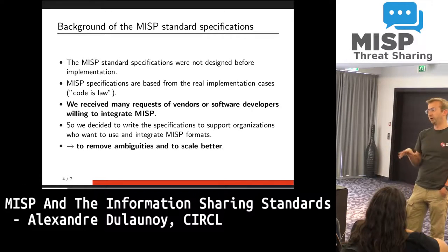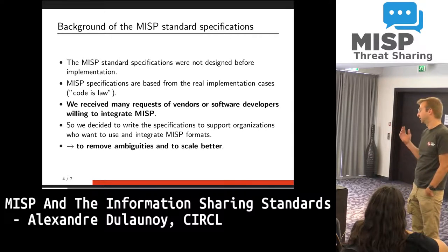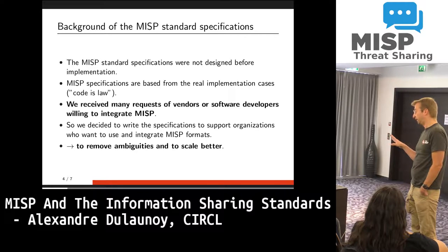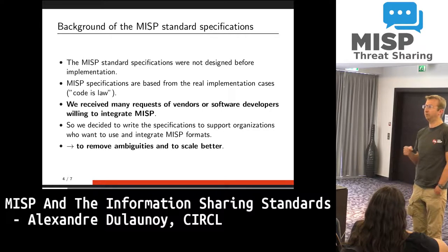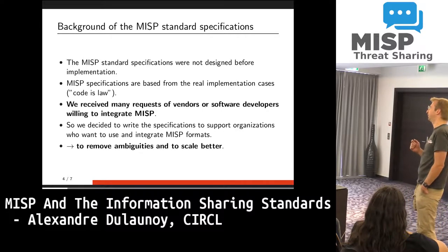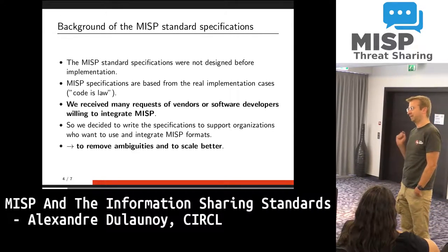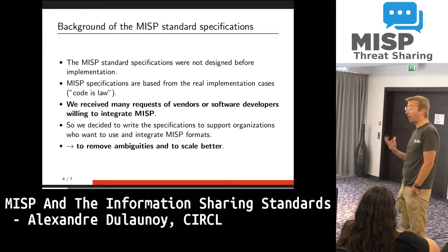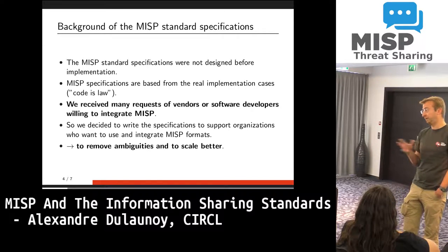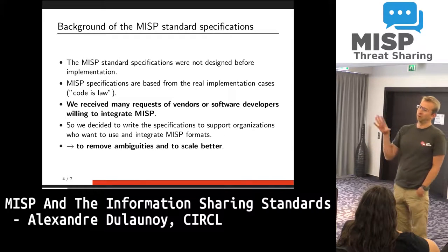We started with two elements, and I will go into the details, but the core format and the taxonomy format are now Internet Drafts. Our main goal was basically to remove ambiguities, and the most important part for us was to scale better. If we receive each time a vendor email wanting to implement something, we can say: you have an Internet Draft there, look at it, and if you have any ambiguity just pull request something — but basically everything should be there and you can do your thing. That's why we went with a standard.